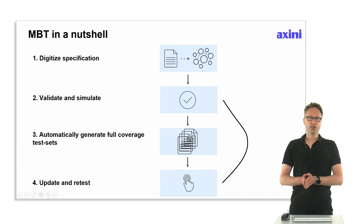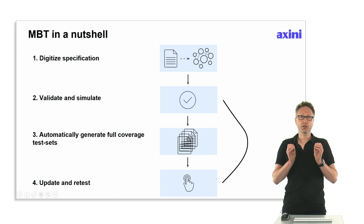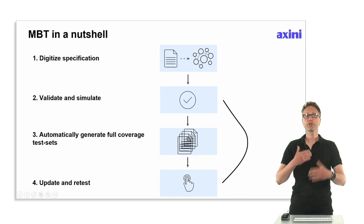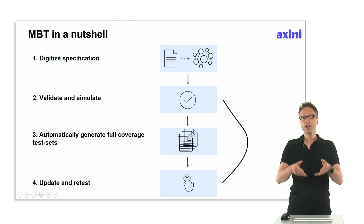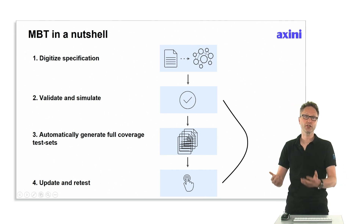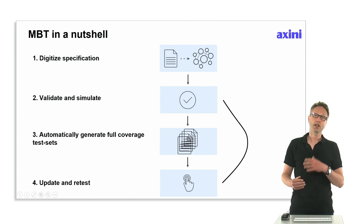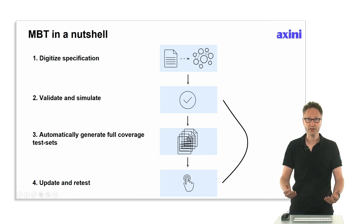So what is model-based testing in a nutshell? First, you digitize your specification. Once it is digitized — once you have explained it to a computer, so to speak — you can validate and simulate it, checking your design for correctness. Once you have an implementation, you can generate a full-coverage test set. After you detect mistakes — either in your implementation, your model, or your requirements — you correct them, update your model, and retest.